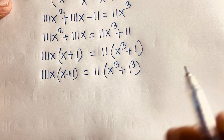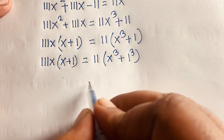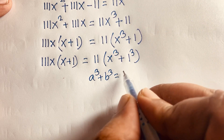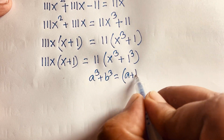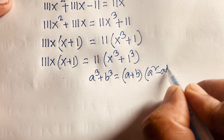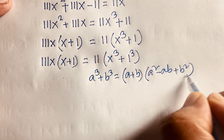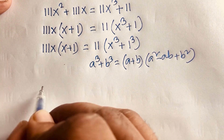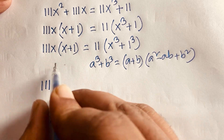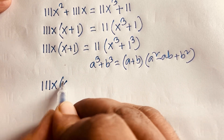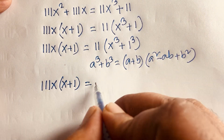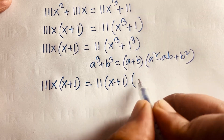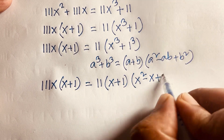Now I can write x cubed plus 1 as x cubed plus 1 cubed. Using the identity a cubed plus b cubed equals (a + b)(a squared minus ab plus b squared), we get x cubed plus 1 equals (x + 1)(x squared minus x + 1).